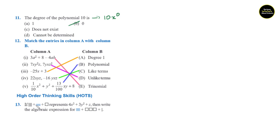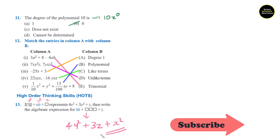Last question: if 4 vertical lines plus 3 horizontal lines plus a square represent 4h square plus 3y square plus z, then write the algebraic expression for 4 horizontal lines plus 3 squares plus 1 vertical line. From the given representation: one vertical line represents h square, one horizontal line represents y square, and one square represents z. So 4 horizontal lines give 4y square, 3 squares give 3z, and 1 vertical line gives h square. The answer is 4y square plus 3z plus h square.